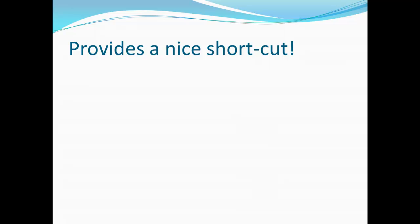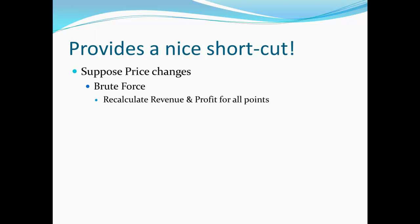So why go through all of this? It provides a very nice shortcut in the real world, since the price of things changes over time — with gasoline, milk, eggs, and the like. Because marginal revenue and price are the same thing, all we have to do is calculate marginal cost once, then set marginal revenue to whatever the price happens to be. With brute force, we'd have to recalculate all revenue and profit for every possible point. The Output Rule eliminates that work whenever price changes.